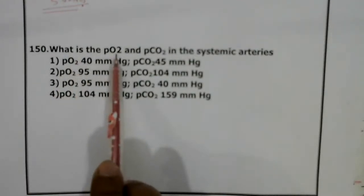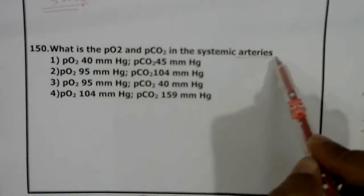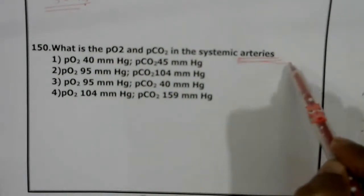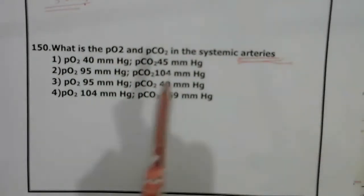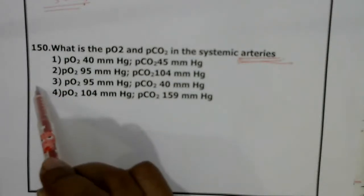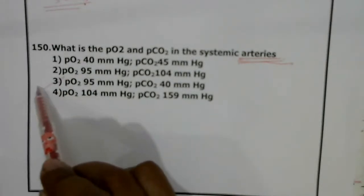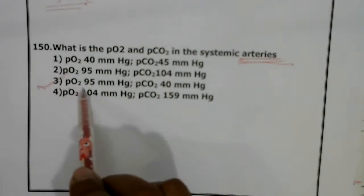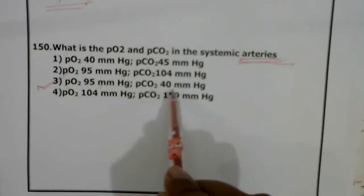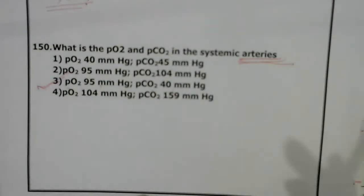Question 150: What is the PCO2 in arteries? From the values, arterial PO2 is 95 mmHg and PCO2 is 40 mmHg.